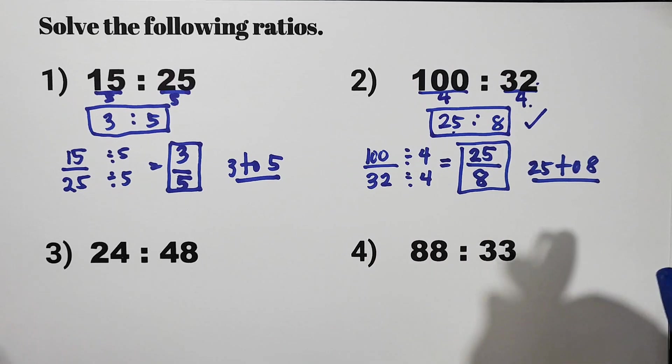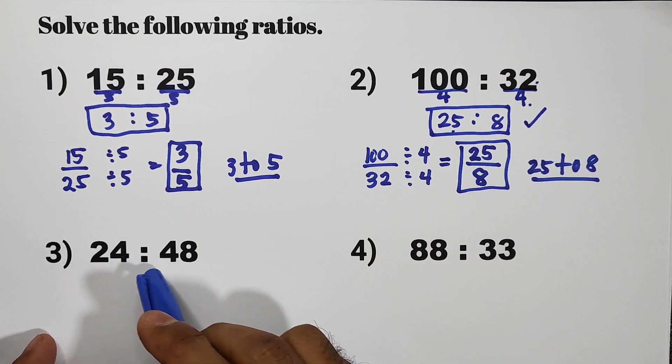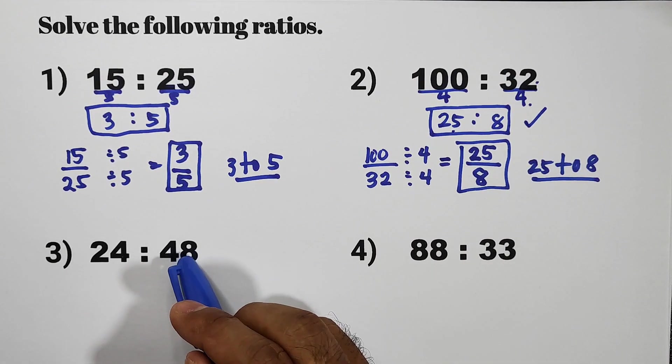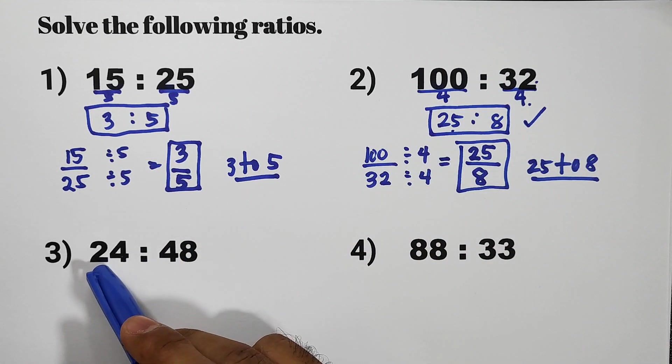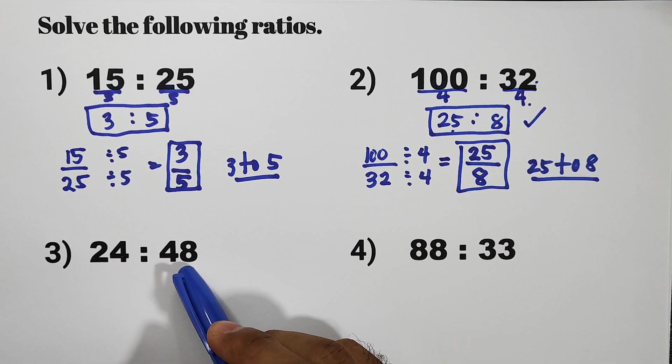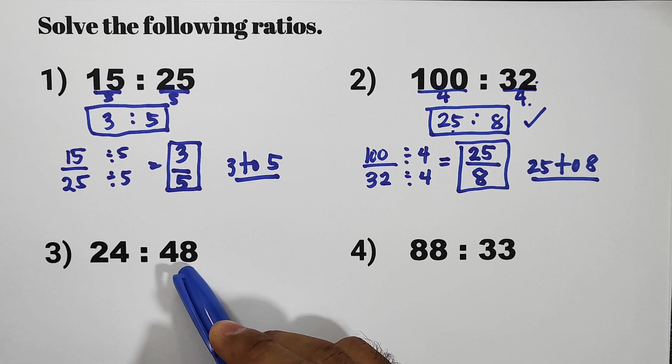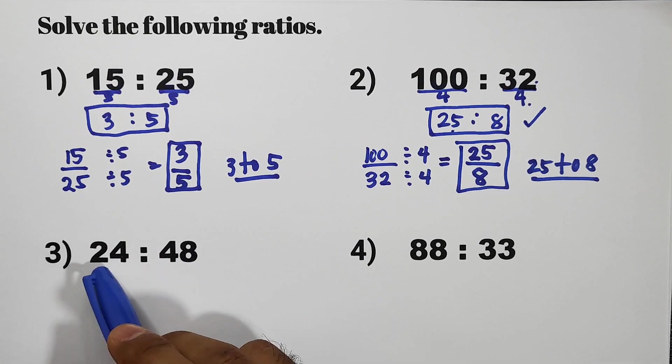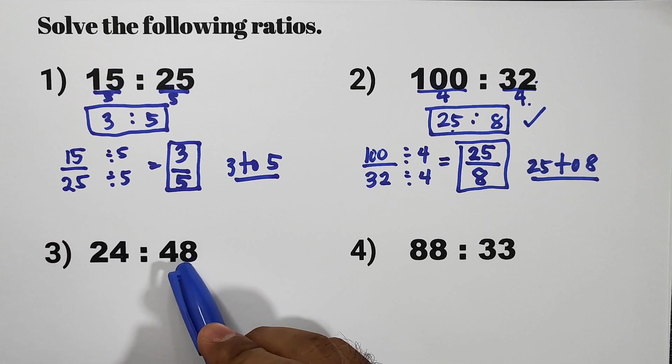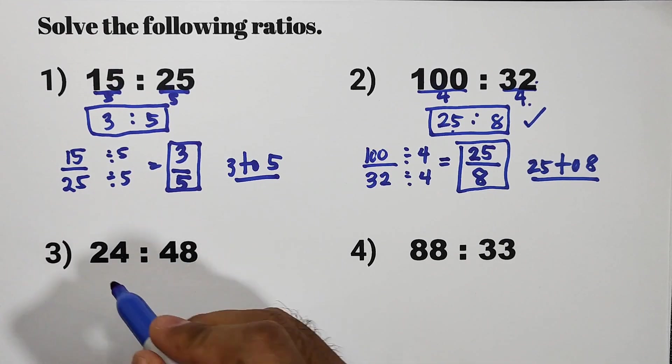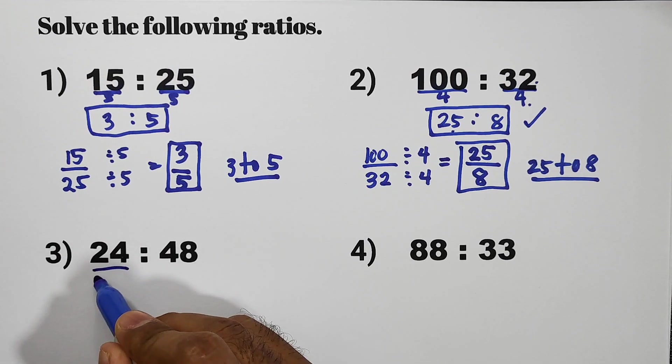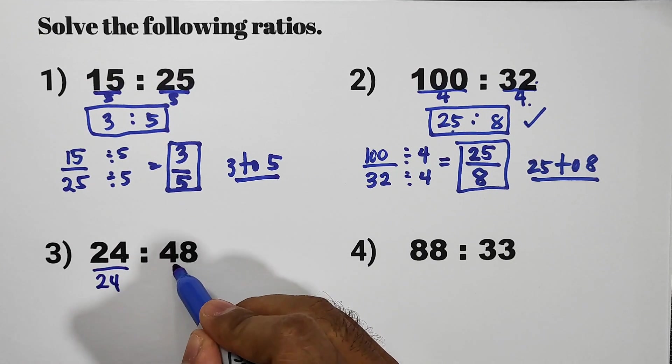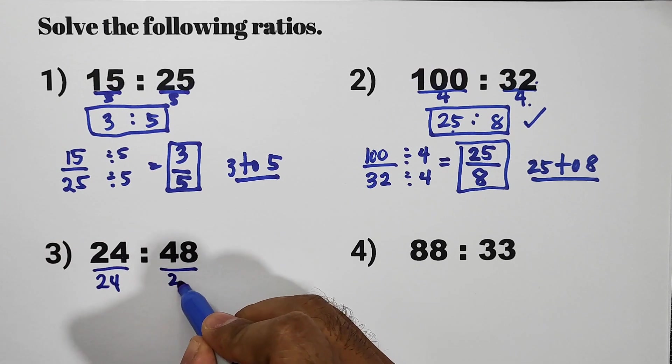Let us have item number 3. That is 24 is to 48. So let us use the easiest one by dividing this 24 and 48 by the greatest common factor. What is the greatest common factor of 24 and 48?